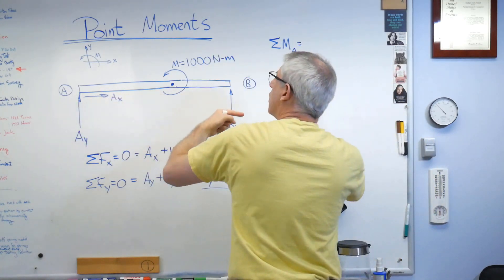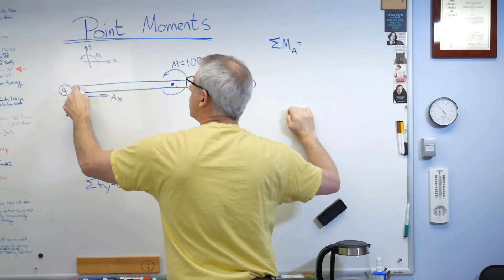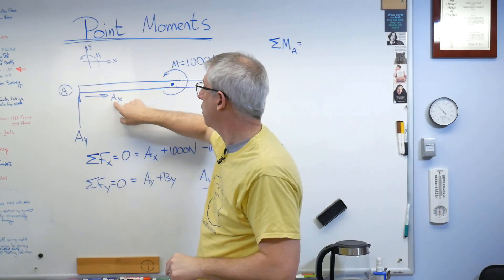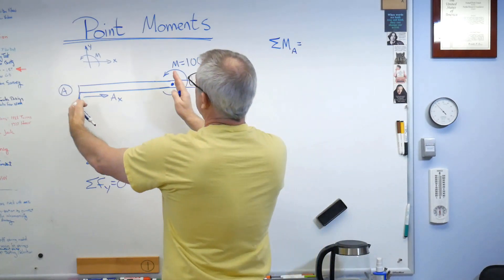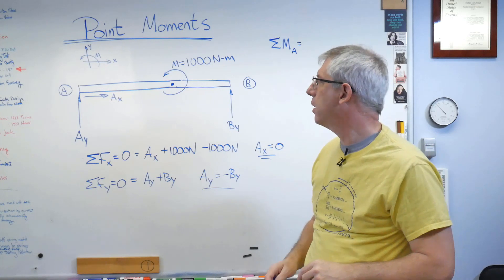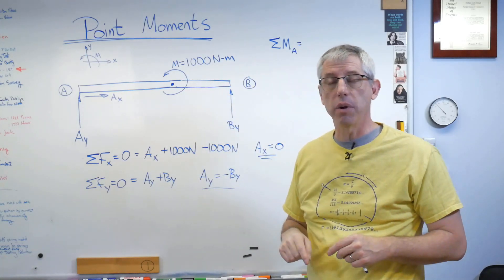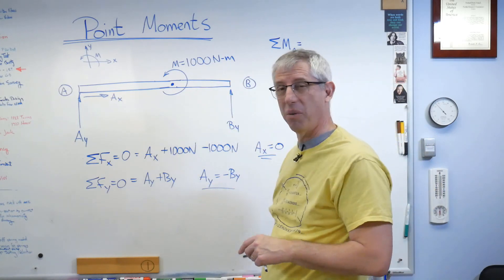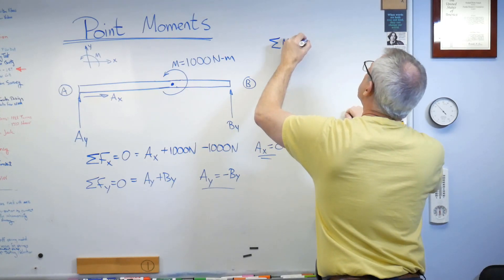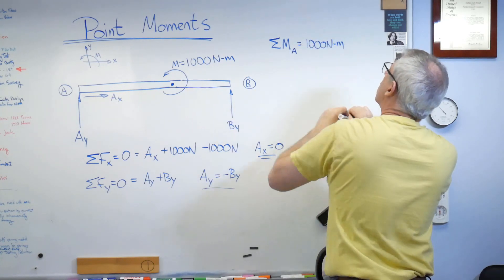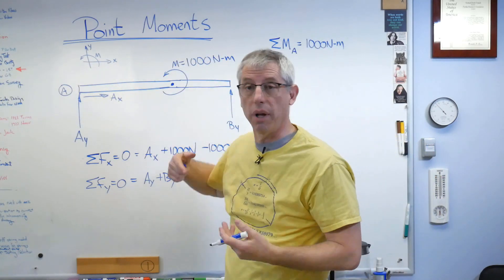Looking left to right, the moment is three meters out. How do I handle this point moment? Point moments don't have a distance — they already have units of moment. If I tried to multiply by a distance again, I'd get Newton meters squared, which is not a moment. So I just add a thousand Newton meters directly into the equation. This is counterclockwise, and my sign convention says counterclockwise is positive. Then By is at five meters and also tries to rotate counterclockwise about A — also positive.